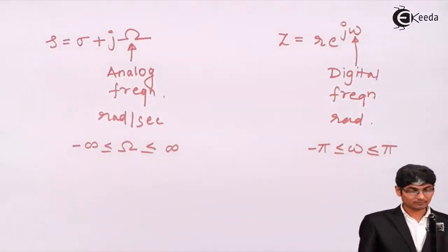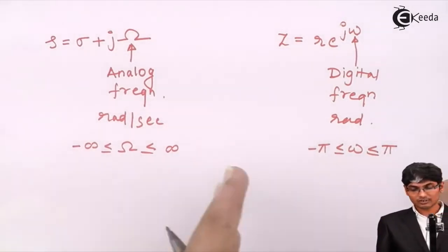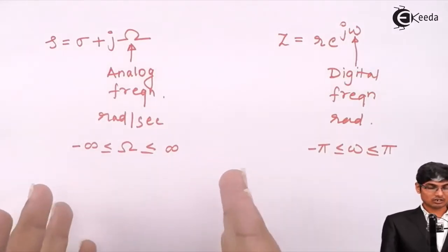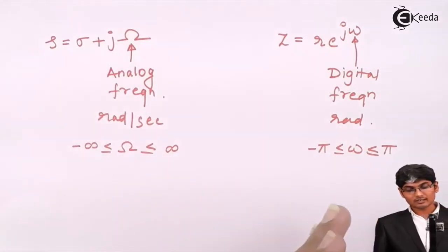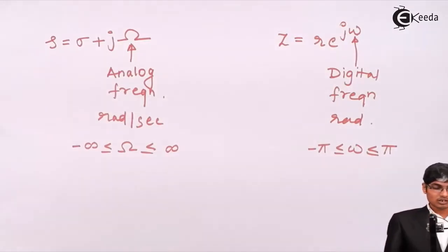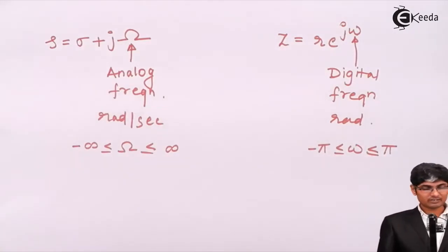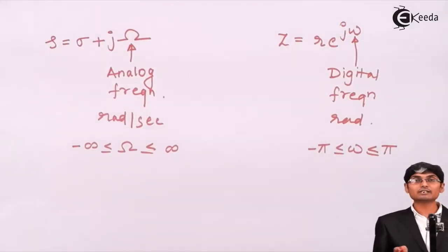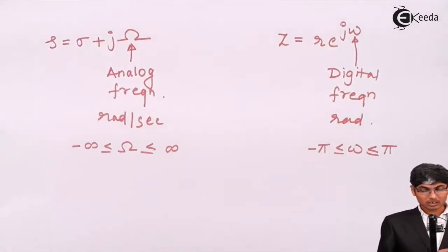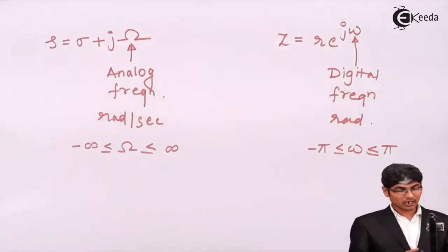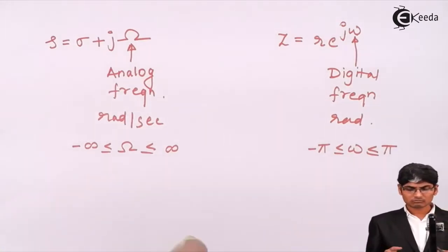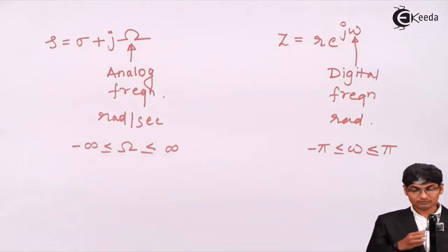So we can see the differences: in the analog domain, frequency is measured in radians per second with limits from minus infinity to plus infinity, whereas digital frequency is in radians with limits from minus π to plus π. We need to devise a mechanism to map the analog frequency range to the digital filter's frequency range.